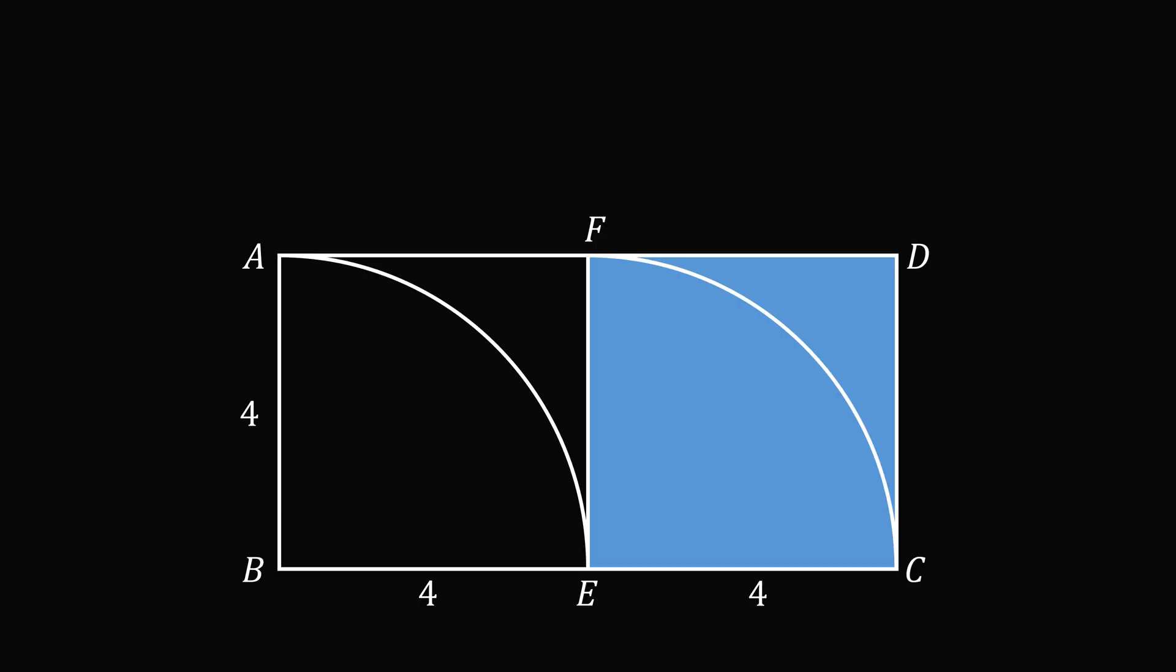And then CD is equal to AB, which is equal to 4. So now, the area of the blue region is exactly the area of the square ECDF, which is equal to 4 times 4, which equals 16. And that's the answer.